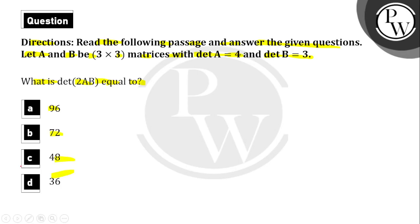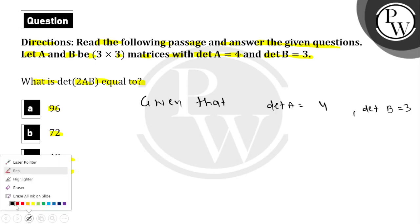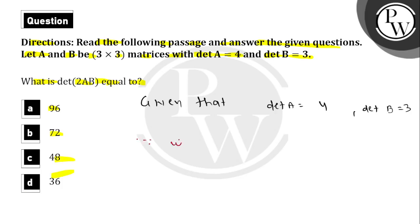We need to find the correct option. What is given here: determinant of A is 4, determinant of B is 3. We have 3×3 matrices A and B. Since we know that...